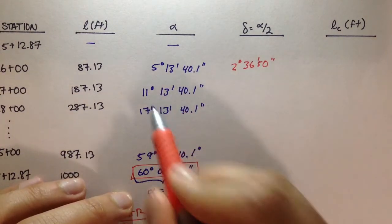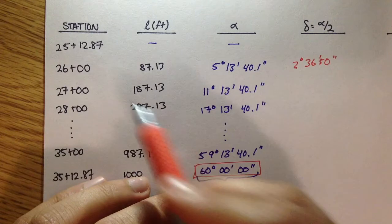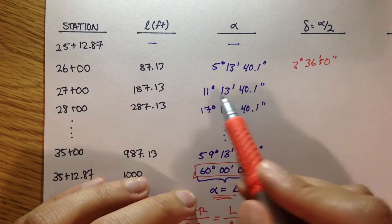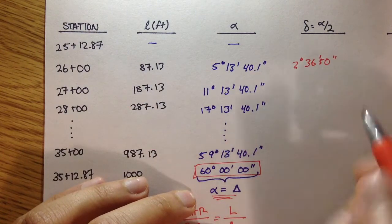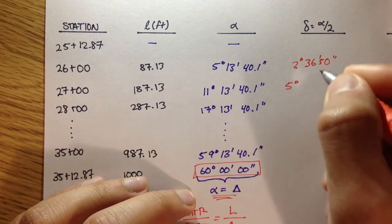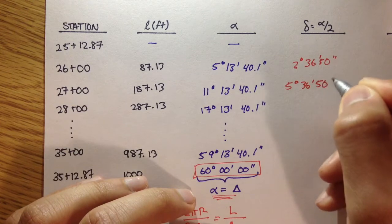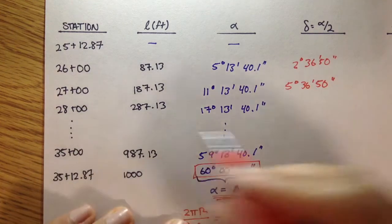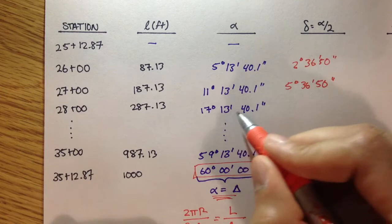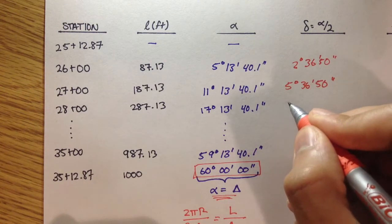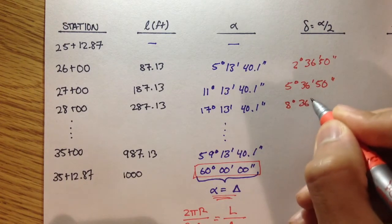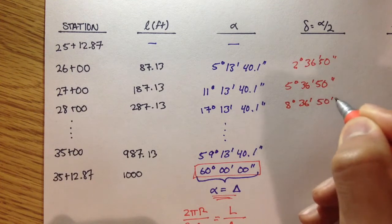You take the next station, which is 27 plus 00. You take its alpha, and you divide that by 2. You should get 5 degrees, 36 minutes, 50 seconds. You go to the next station, 28 plus 00. You divide its alpha by 2, and you should get 8 degrees, 36 minutes, 50 seconds.